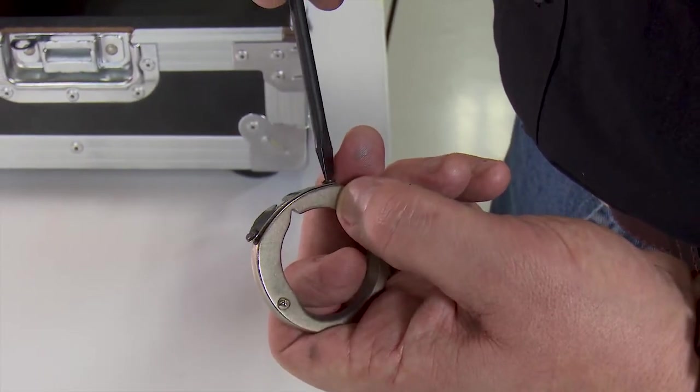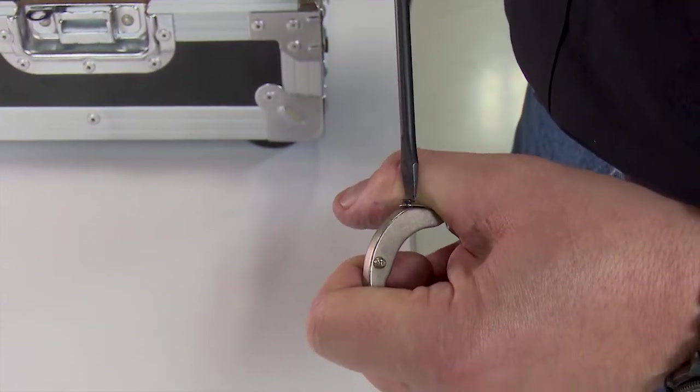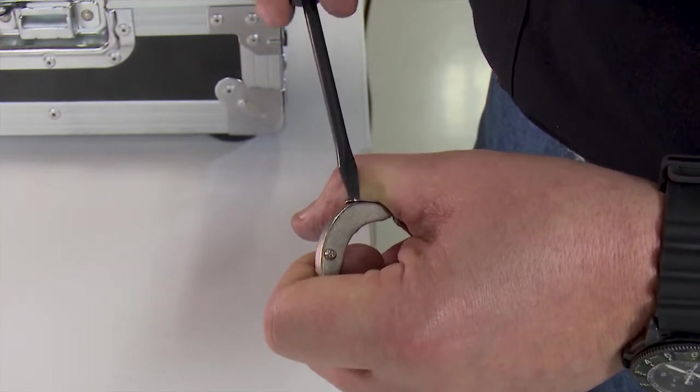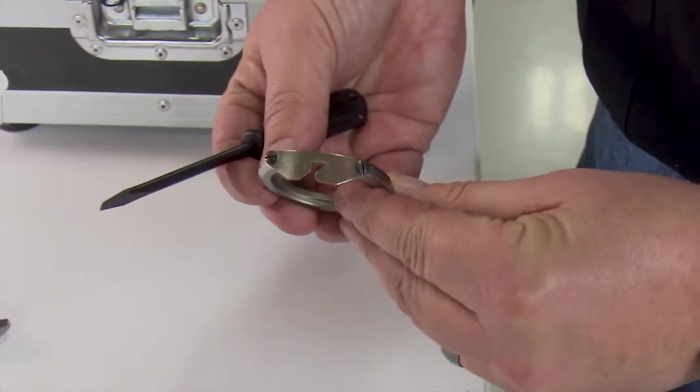Notice here how Matt is pressing down on the center of the cap spring with his thumb to ensure there aren't any humps in the cap spring before tightening down the second screw. This also ensures the cap spring is flush with the retaining ring.